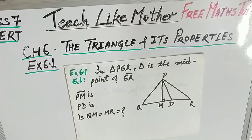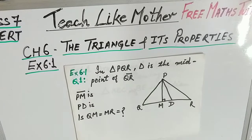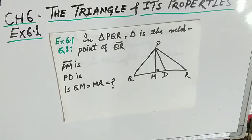Hi students, let us start Exercise 6.1 of Class 7. The name of the chapter is 'The Triangle and Its Properties.' We have already done the introduction part of this chapter, so you can find the link in the description box, or at the end screen when the video ends. You can click on it to revise the concept of the introduction.